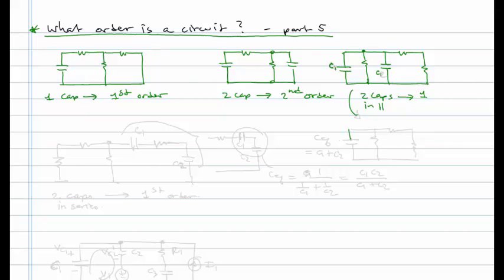Because what you could do is you could redraw this as a circuit with one cap where we have this equivalent capacitance is just equal to C1 plus C2.